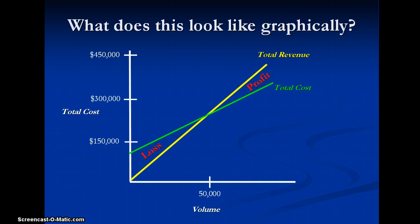So what you see at that 50,000 mark, to the left of the 50,000 mark, the total revenue line, which is the yellow line, is underneath the total cost line. So that means our costs are higher than our revenues. So we have a loss. On the right-hand side of the graph, we have our total costs underneath our total revenues. So our revenues are higher than costs. So we have a total profit.